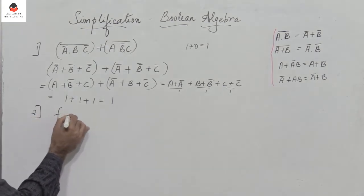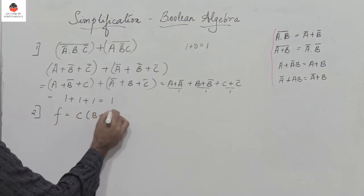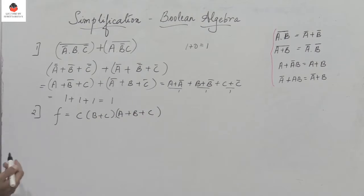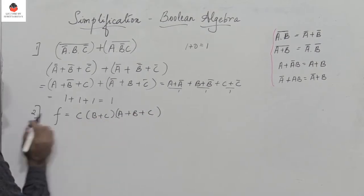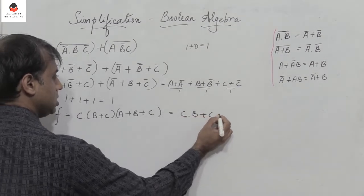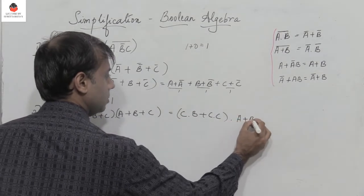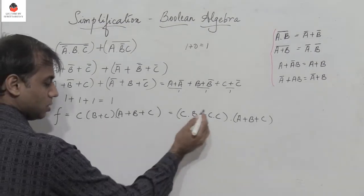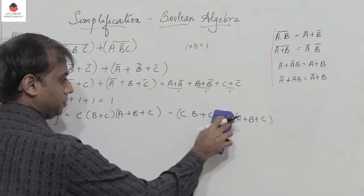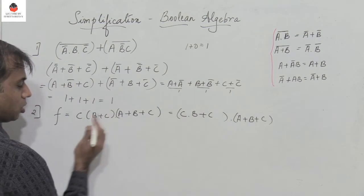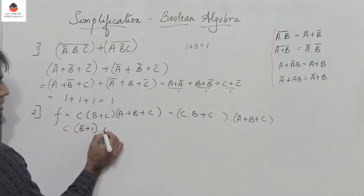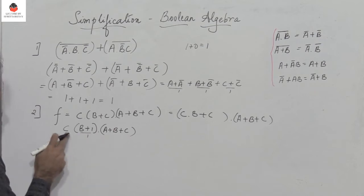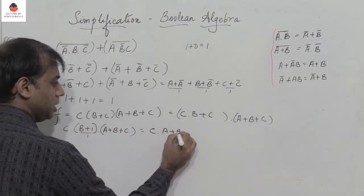Second problem: f = c(b + c)(a + b + c). First, multiply c with (b + c): we get cb + c·c = bc + c. Taking c common, we get c(b + 1)(a + b + c). Since 1 + anything = 1, (b+1) = 1, so this reduces to c(a + b + c).